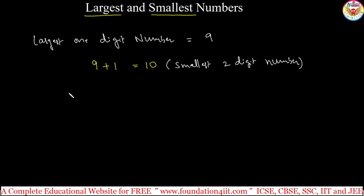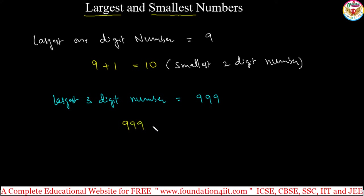Same way, take the largest three-digit number. The largest three-digit number is three 9s, that means 999. This is the largest three-digit number. By adding 1 to this — 999 plus 1 — this becomes 1000. So 999 plus 1 is 1000, and 1000 is the smallest four-digit number.